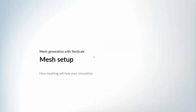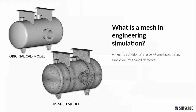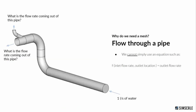Let's talk about what a mesh is in engineering simulation and why we need this step between importing the CAD model and starting the simulation. A mesh is a division of a volume — for example a pressure vessel — divided into smaller elements, smaller volumes called elements. To understand why, let's take a simple example of a CFD case, which is also valid for FEA.